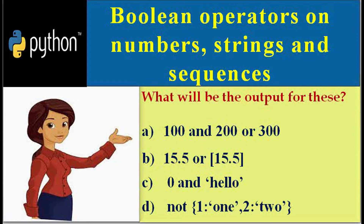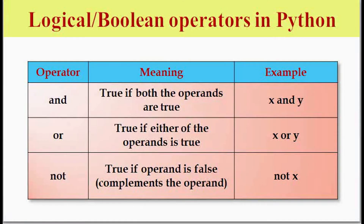We have three boolean operators in Python: the AND operator, OR operator, and NOT operator. AND and OR take two operands; NOT takes only one operand. So x and y are the operands. For the AND operator, the result is true if both operands are true — if x and y both are true, it returns true.